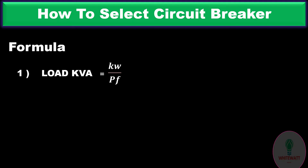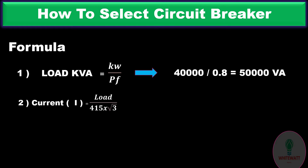For step one, load conversion to kVA, we use the formula: kilowatt divided by power factor. Putting in the values: 40,000 divided by 0.8, the answer becomes 50,000 VA, or 50 kVA.